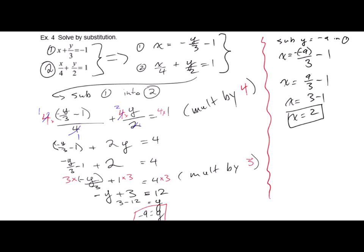So x is 2. So now all you have to state is, therefore, the solution is xy equals bracket 2 negative 9. And we're done.